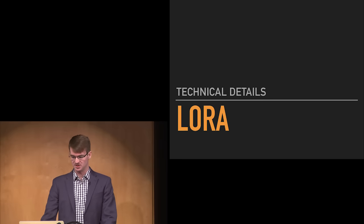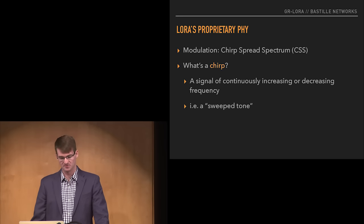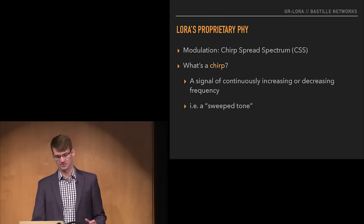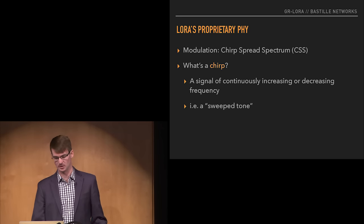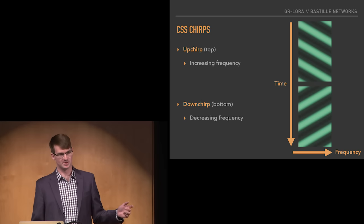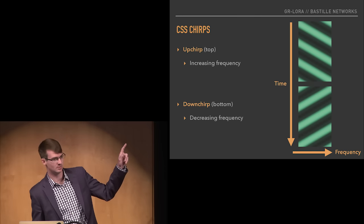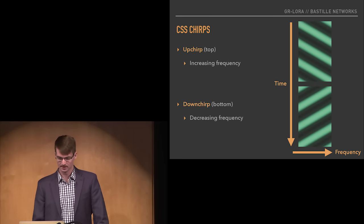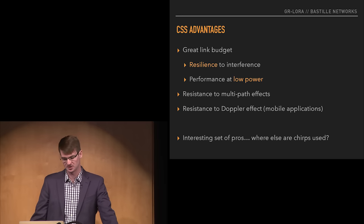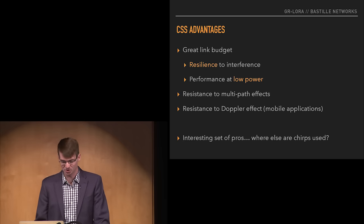That wraps up the background. Let's get into the details of LoRa. LoRa is built on a proprietary modulation that's a type of chirp spread spectrum. A chirp is a signal of continuously increasing or decreasing frequency — kind of like a sweep tone. Here's a spectrogram of an up chirp and a down chirp. An up chirp is continuously increasing frequency, a down chirp is continuously decreasing frequency, channelized to a certain band so when the frequency reaches the end of the band it wraps back down.